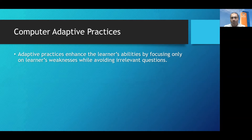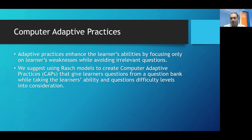The general idea behind adaptive practices is that we want to create practices that enhance learners' abilities by focusing only on the learner's weaknesses, instead of giving the student all kinds of questions from our question bank — which is the time-consuming and time-wasting approach. It is better to give the student only questions that address the exact weaknesses of this learner, while avoiding any irrelevant questions. So we propose using Rasch models to create computer adaptive practices that give learners questions from a question bank, taking into consideration not only the learner's ability but also the questions' difficulty levels.